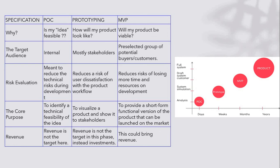Do we get revenue on POC? No, revenue is not the target here. Prototyping? No, we don't get revenue there either — instead we can get investments. MVP? Yes, we could bring in some revenue from the pre-selected set of buyers we have identified. See the way things go: first, with a big idea, go with the POC. Then go with the prototype. Then build the MVP. And finally, by adding more features after getting feedback from end users and stakeholders, the product goes on to the market. It ideally starts with days and ends with years — it is a process. POC → Prototype → MVP → Product.